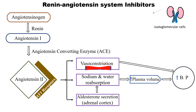Vasoconstriction can be reduced by administering vasodilators — agents that relax vascular smooth muscles and decrease blood pressure. Sodium and water reabsorption can be decreased by administering diuretics — agents that increase elimination of sodium and water, decreasing plasma volume and reducing blood pressure. Finally, the release of aldosterone can be reduced by giving aldosterone antagonists, which inhibit or decrease aldosterone release from the adrenal cortex, leading to decreased blood pressure.